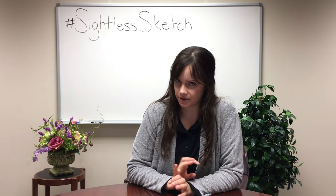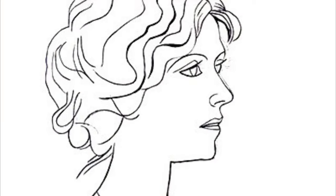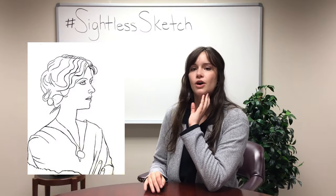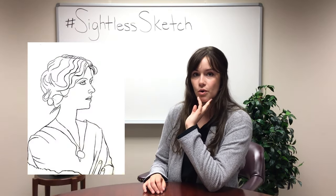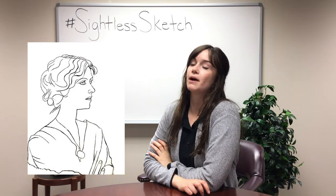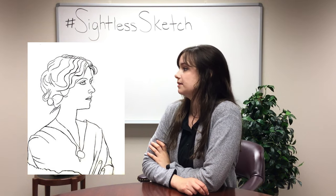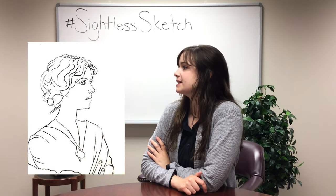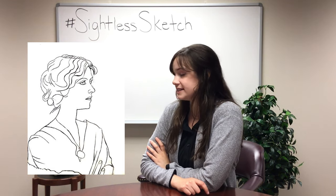I'll show you a few examples here. This is called Portrait of Olga from 1920 and this is a Pablo Picasso — one continuous line, not too detailed.